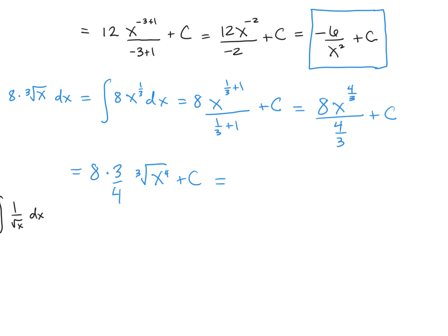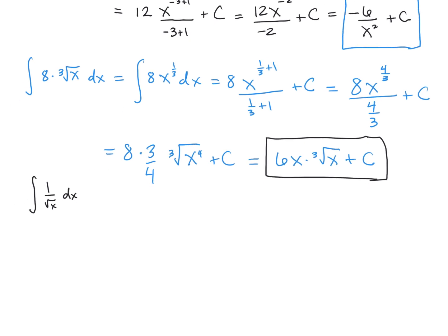And finally, simplifying down more, we've got 8 times 3, which is 24, divided by 4, which makes 6. We can also take out an x from the cube root of x to the 4th. And we're left with the cube root of x inside of our radical. And of course, that is plus a constant C.